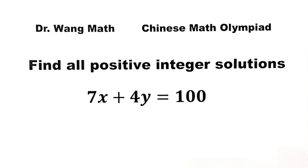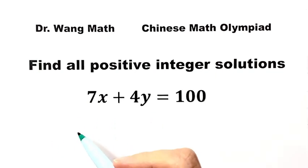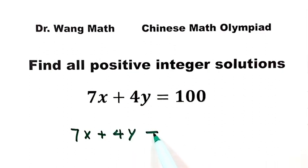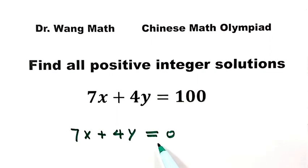First, we can start from the left-hand side of the equation. That's 7x plus 4y, then set it equal to 0. This is called a homogeneous equation. Let's label this one as equation 1.